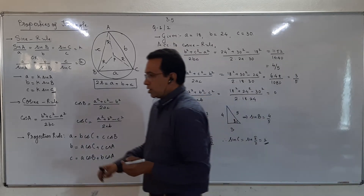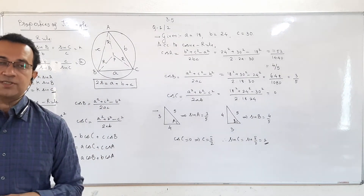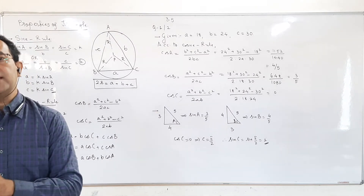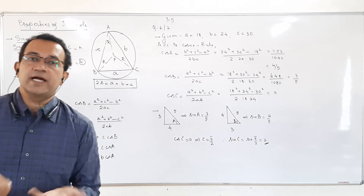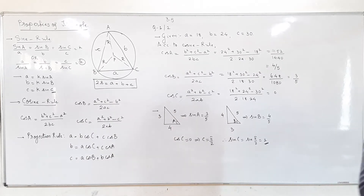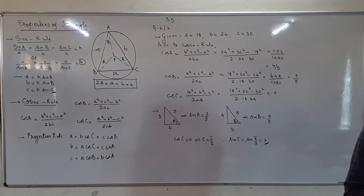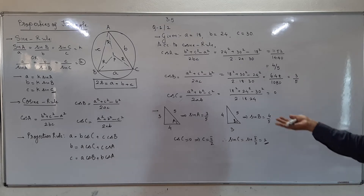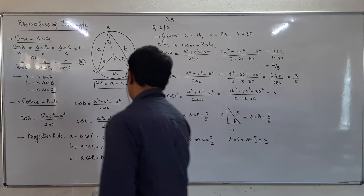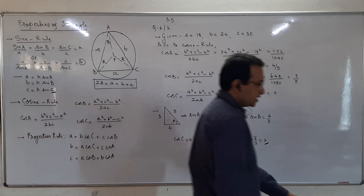Based on cos A equals 4 by 5, plotting the triangle gives sin A equals 3 by 5. From cos B equals 3 by 5, sin B equals 4 by 5. And since cos C equals 0, C equals pi by 2, so sin C equals 1. We have thus found sin A, sin B, and sin C directly from the cosine rule results — this was the direct application required in sum number 1 and 2.